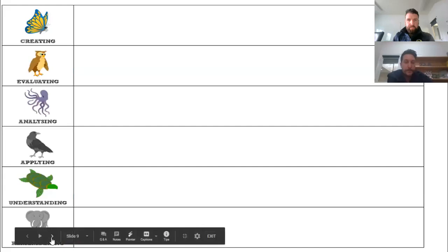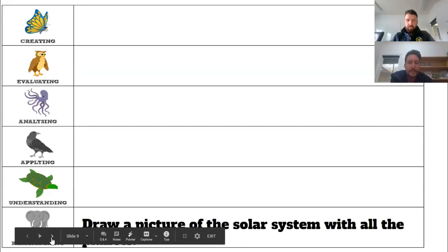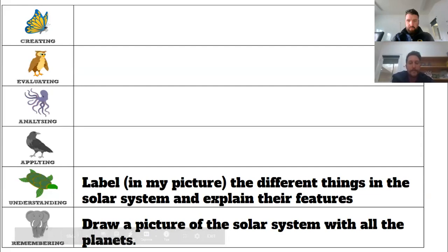Thinking about my topic - space - if I was to show some learning for the first two stages of Bloom's: for Remembering, I could draw a picture of the solar system - that's something I could show at the Remembering stage. For Understanding, I could label the different things in the solar system and explain their features to show I understand parts of the solar system. Those are the two things I could show to be successful with my chosen topic.